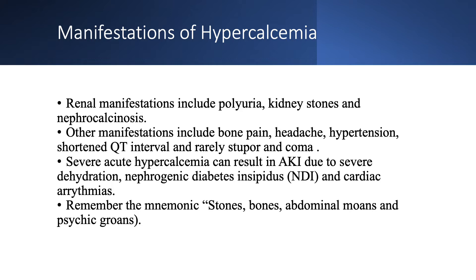Remember that severe acute hypercalcemia can cause acute kidney injury because we get dehydration and nephrogenic diabetes insipidus. Remember, you get nephrogenic DI in hypokalemia and hypercalcemia. You can also get cardiac arrhythmias with hypercalcemia. Some people like mnemonics: stones, bones, abdominal moans, and psychic groans to remember the manifestations of hypercalcemia.